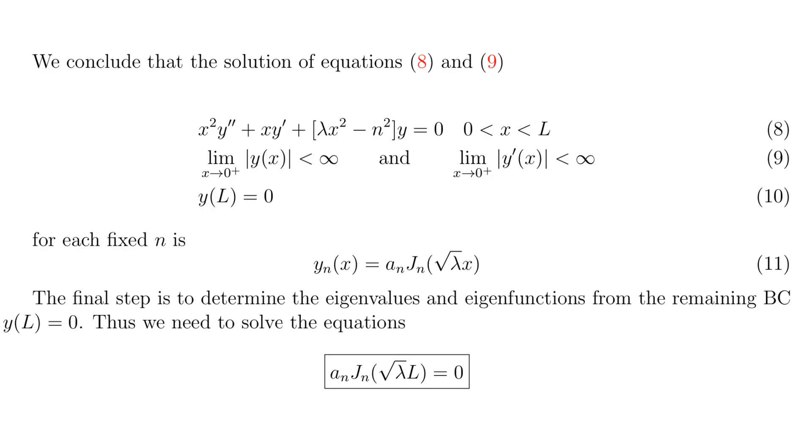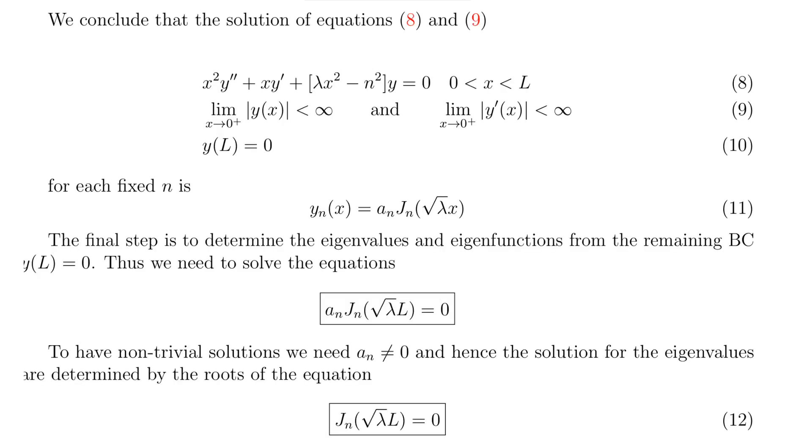The final step is to determine the eigenvalues and eigenfunctions from the remaining boundary condition 10. Thus we need to solve the equation given in the box here at the bottom of the screen. To have non-trivial solutions, we of course need a sub n to be non-zero, and hence the equation to solve for the eigenvalues is equation 12.